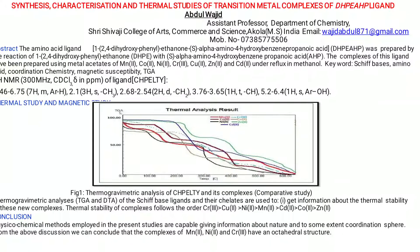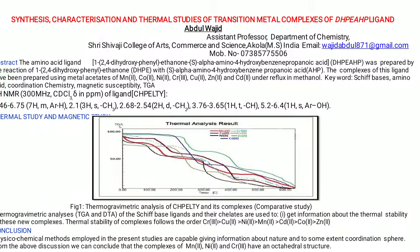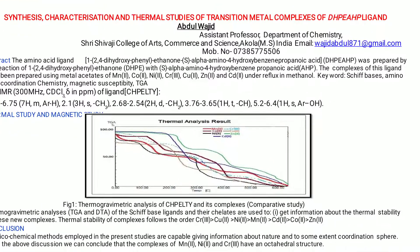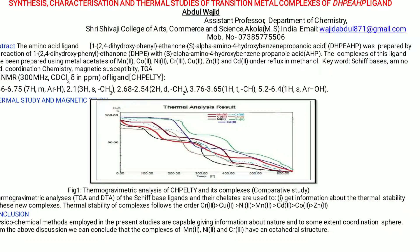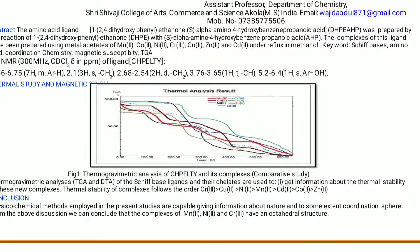Next we will switch to one of the main topics of our presentation — the thermal study and magnetic study. The main aim of thermogravimetric analysis, TGA, is to get information about the thermal stability of the new complexes and to decide whether particular water molecules are present inside or outside the coordination sphere.